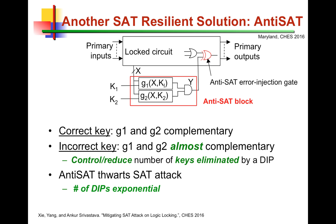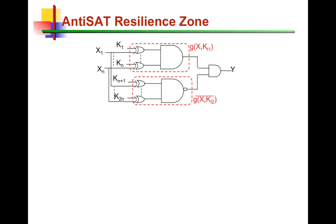That's how anti-SAT resists against the SAT attack. To give you an example, in an anti-SAT block, we can have a big NAND-gate and a big NAND-gate, and these two blocks would be complementary as long as the correct keys are applied. But when the incorrect keys are applied, they are no longer complementary. For a certain set of inputs, they produce the same values, and as a result, an error is injected into the original circuit. For a NAND-gate, the onset is 1, so there is only one input pattern for which these two blocks, G and G-complement, will produce the same values and inject an error into the circuit.